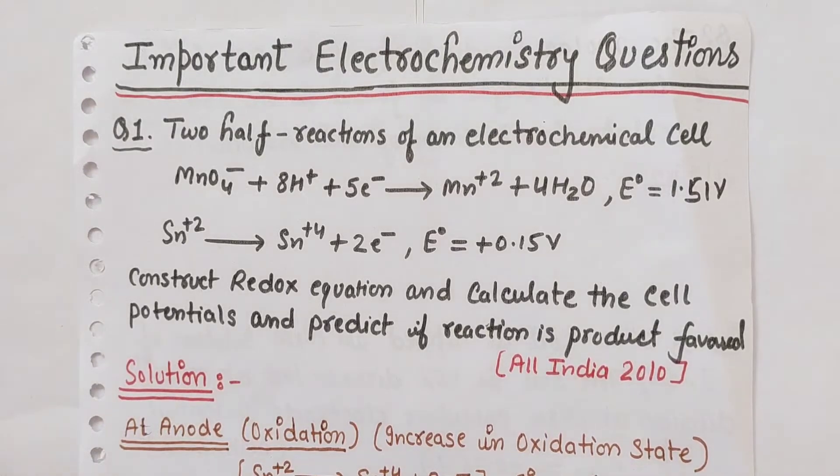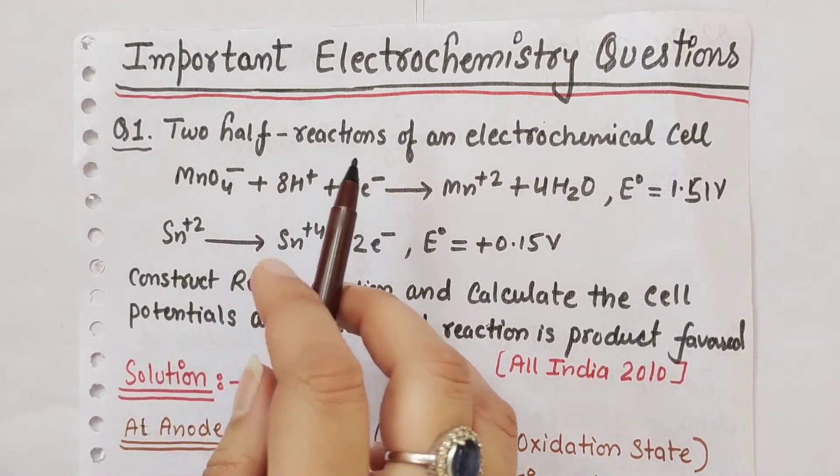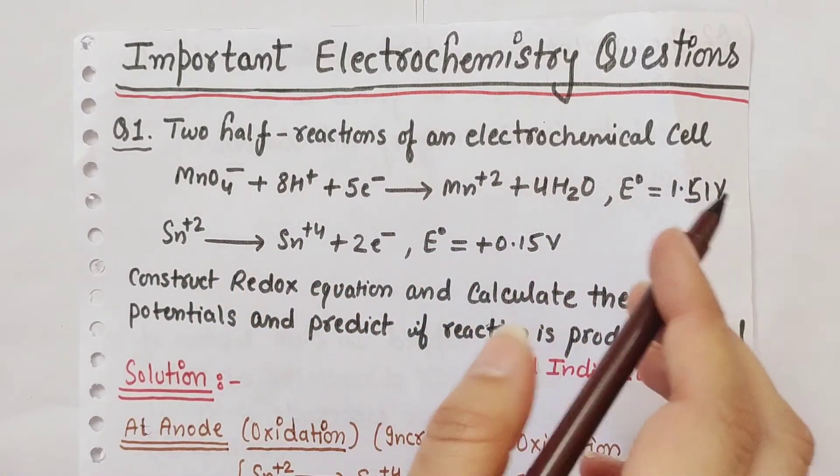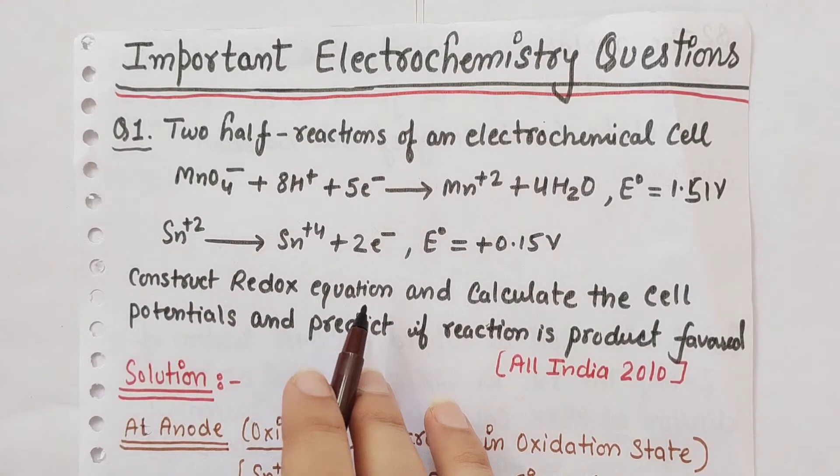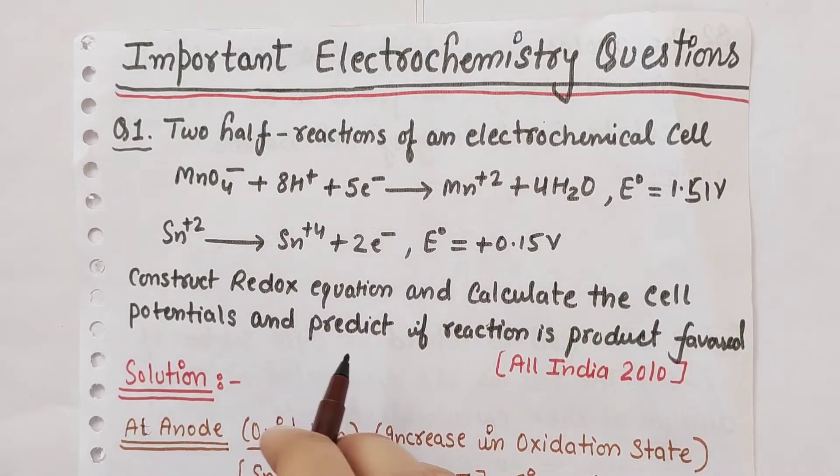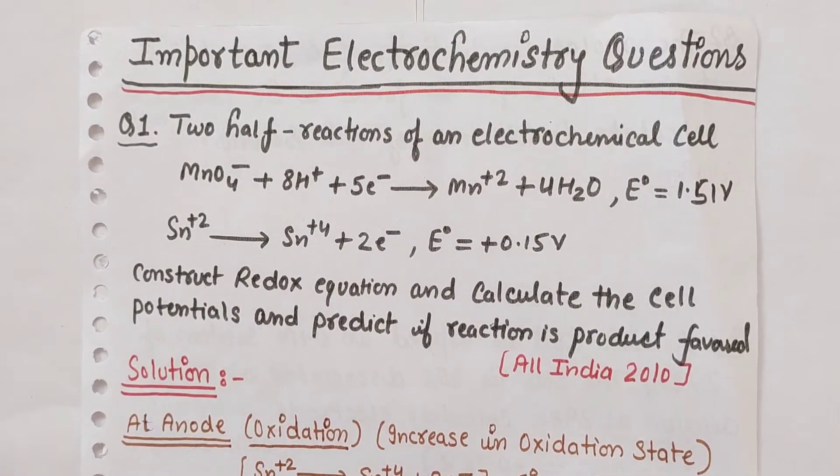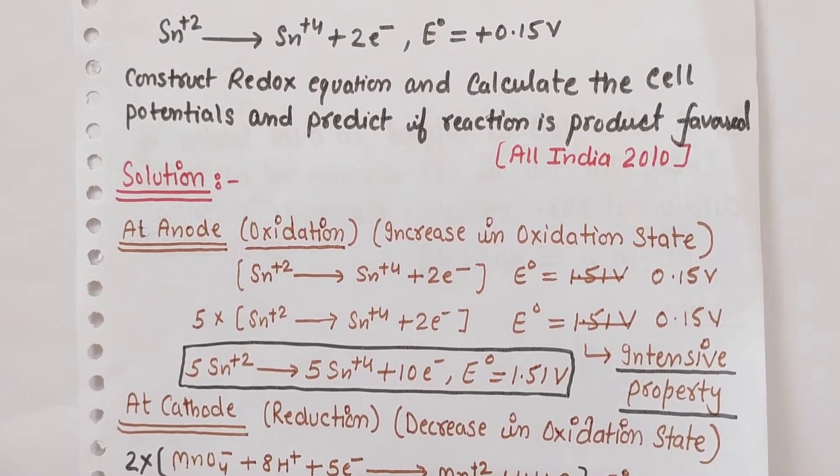Hey everyone, in this video we'll see some important electrochemistry questions. The first question gives two half-reactions of an electrochemical cell. We need to construct the redox equation, calculate the cell potentials, and predict if the reaction is product favored.